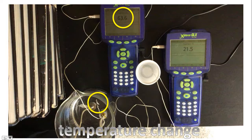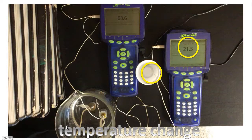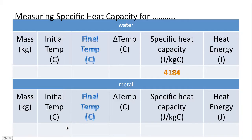At this point, it's reading 63.6 degrees Celsius. The second probe will be placed in the cooler water, the room temperature water. This is the table you'll need to complete today. The specific heat capacity for water is 4,184 joules per kilogram degree Celsius, which can also be written as 4,184 joules per kilogram Kelvin.